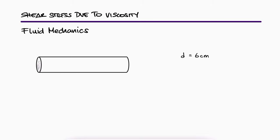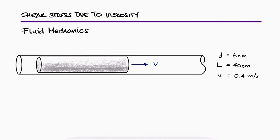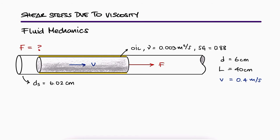A shaft 6 cm in diameter and 40 cm long is pulled steadily at 0.4 meters per second through a sleeve 6.02 cm in diameter. The clearance is filled with oil that has a kinematic viscosity of 0.003 m² per second and a specific gravity of 0.88. What is the force required to pull the shaft?